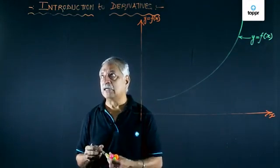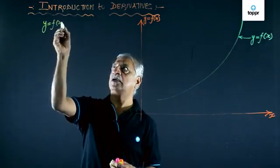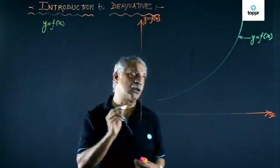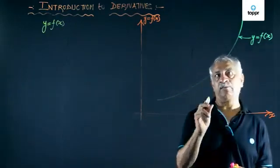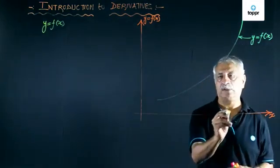Let us consider a real-valued function y equals f of x. Let us plot, as shown in the diagram, the graph of y equals f of x in the coordinate plane.